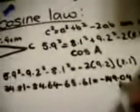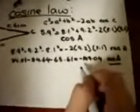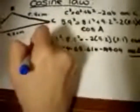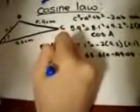So in order to get cosine A on its own, we need to divide both sides by negative 149.04. So for the left side, we have negative 115.44 divided by negative 149.04. And for the right side, we have negative 149.04 cosine A divided by negative 149.04.